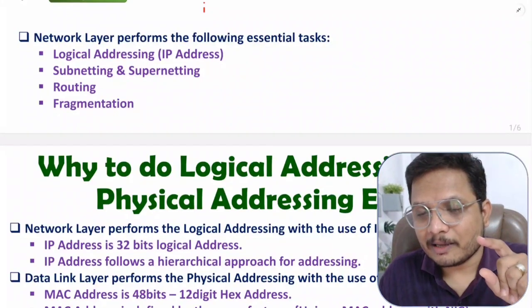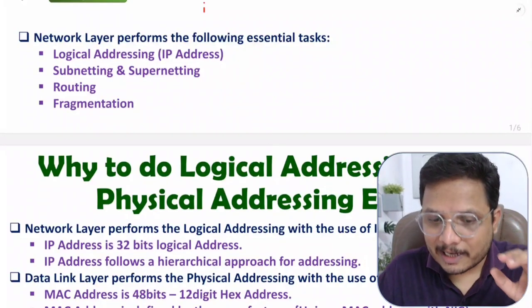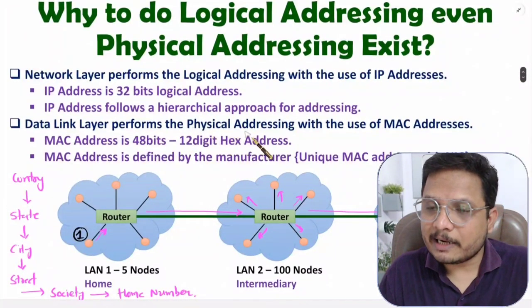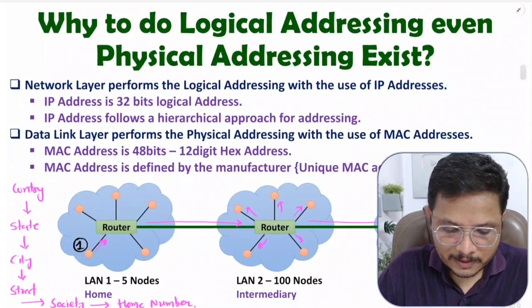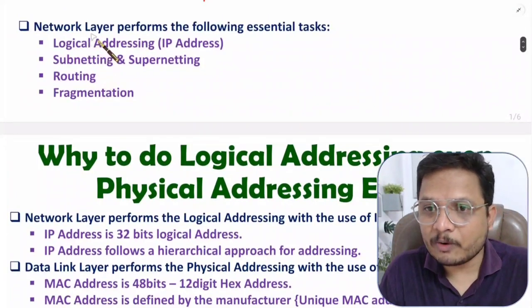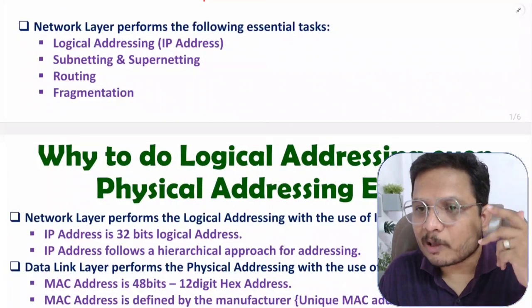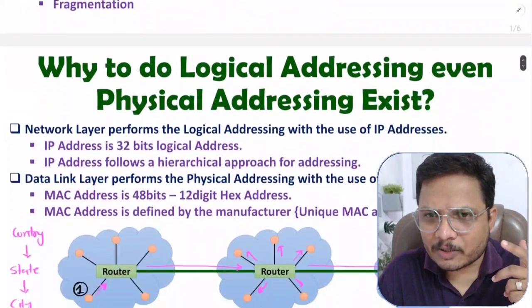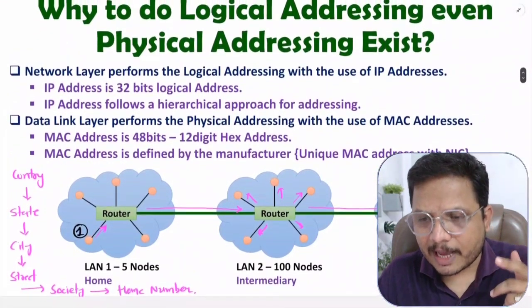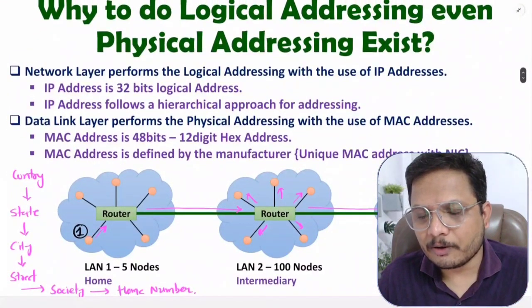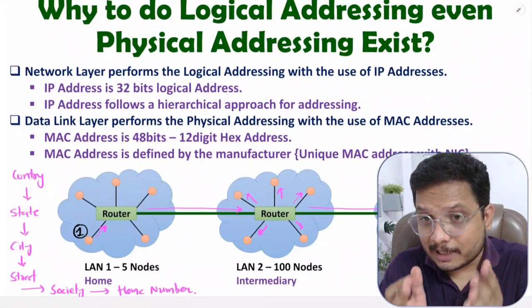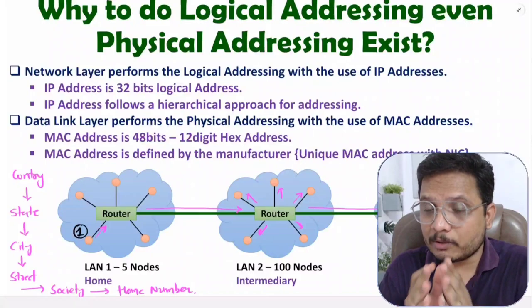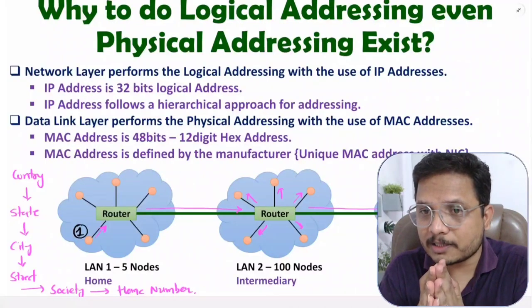With only physical addressing, none of these features would be possible. So all the features I mentioned — subnetting, routing, fragmentation — exist because of logical addressing. I thought I should give you proper reasoning, that's why I made this video. If there's anything you'd like to share, please note it in the comment section. Thank you so much for watching.